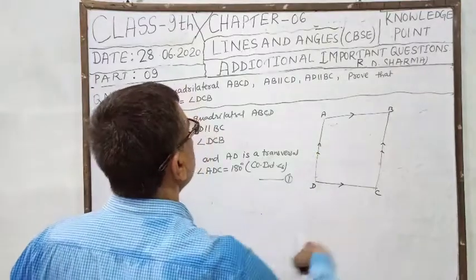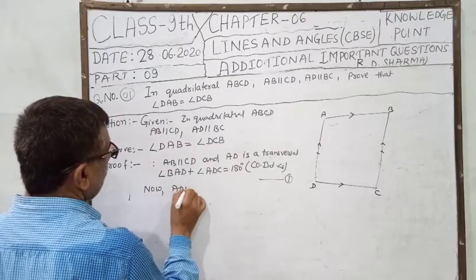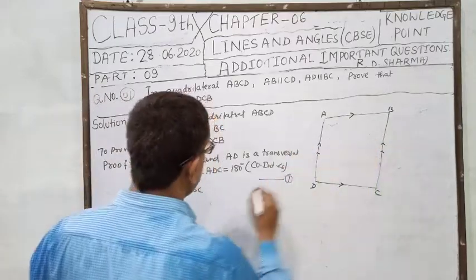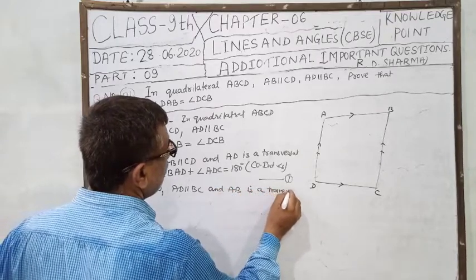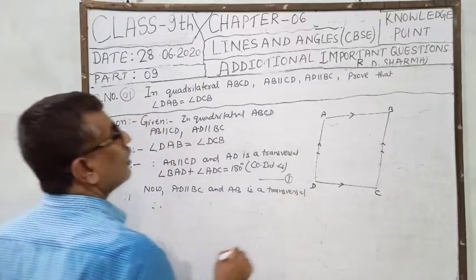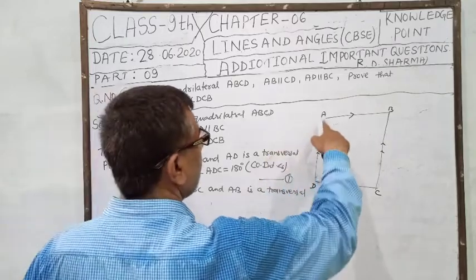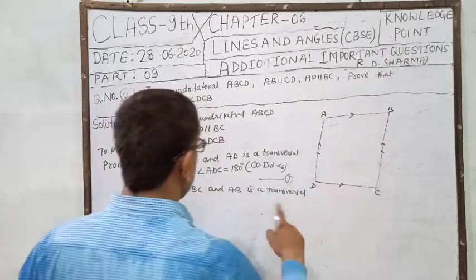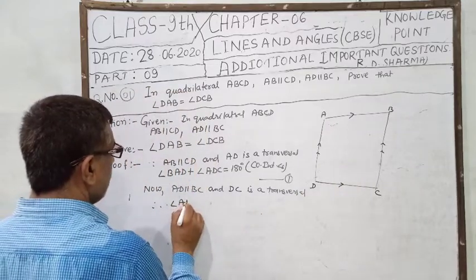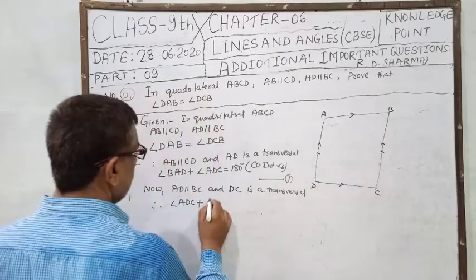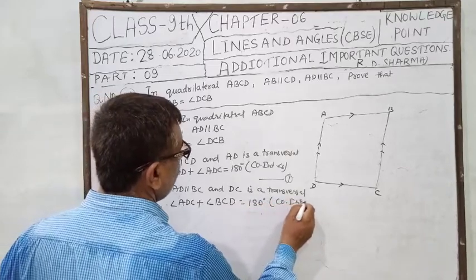Now AD parallel BC, and DC is a transversal. Therefore, angle ADC plus angle BCD is equal to 180 degrees. This is also co-interior angles.